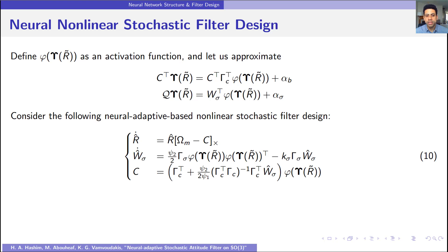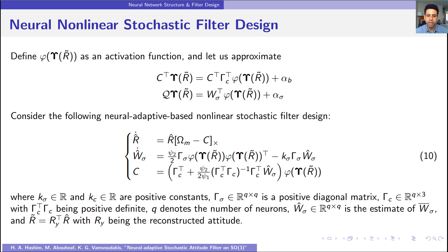Now let us present the neural adaptive based nonlinear stochastic filter design, where R hat dot equal R hat multiplied by skew symmetric of omega M minus C, and W sigma hat dot, which is the adaptation mechanism of the neural weights, equals this equation, and the correction vector is designed as follows.